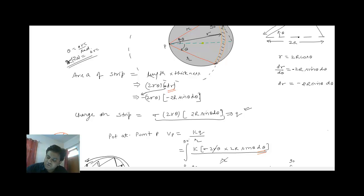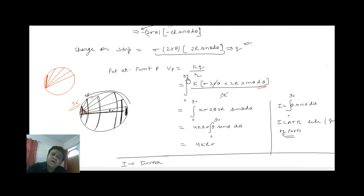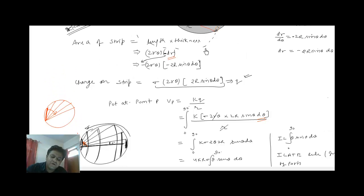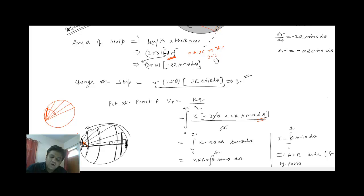That is why I have substituted this minus sign here itself. If you are using limit 0 to 90 degrees, then dR will be negative. And if you are using limit from 90 degrees to 0 degrees, then dR will be increasing, and you are not supposed to put that negative sign that I substituted while calculating the area. So with the limit 0 to 90 degrees, dR is simply negative.